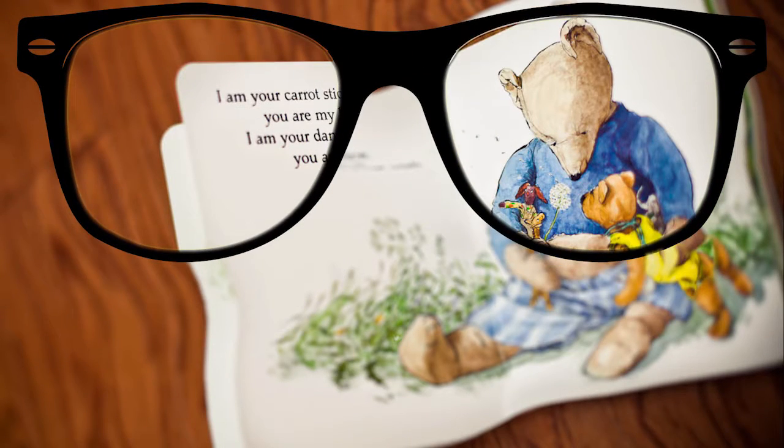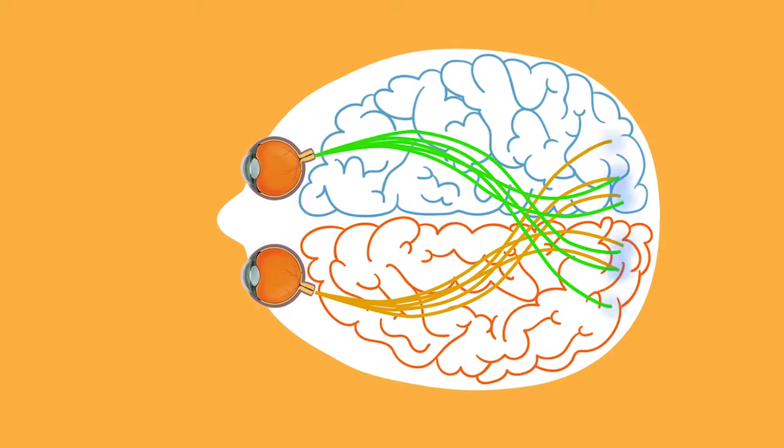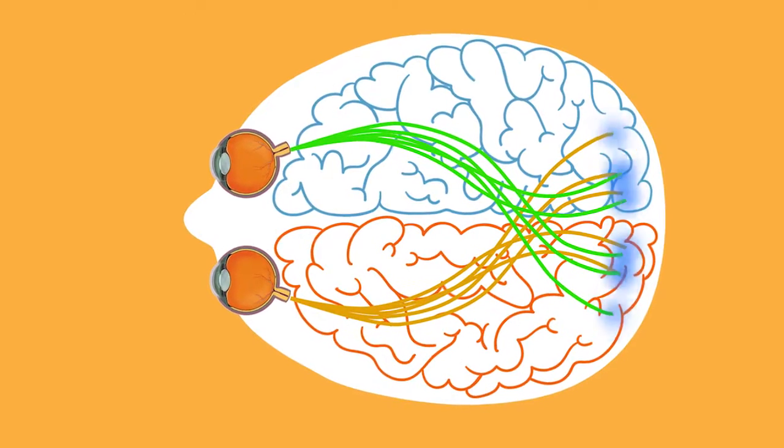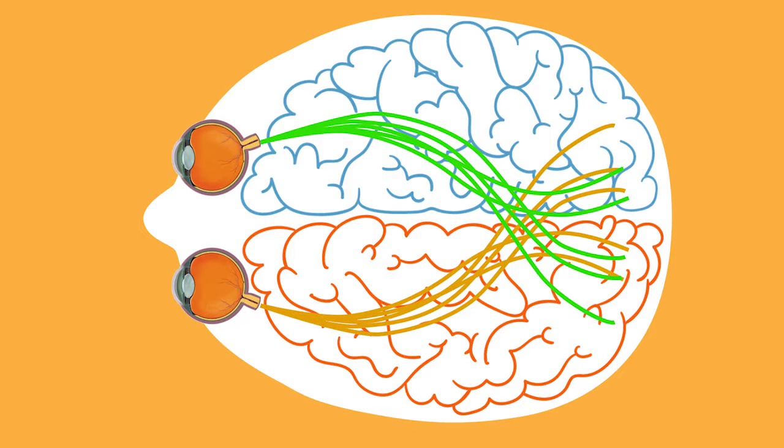Often, amblyopia can be fixed with glasses if a child is still very young. Once a child is around age 7, however, the connection between the eye and the brain stops developing and it is too late to improve the vision, even with glasses.